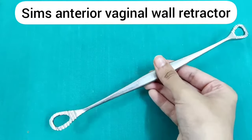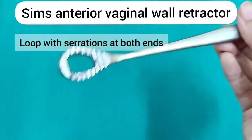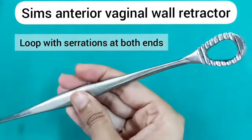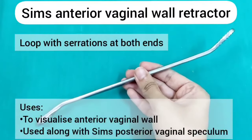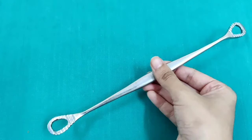Sims' anterior vaginal wall retractor. It has a loop with serrations at both ends. It is used to visualize the anterior vaginal wall along with the Sims' posterior vaginal speculum.